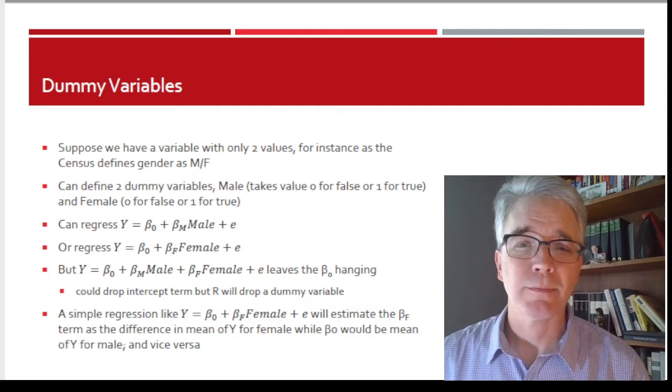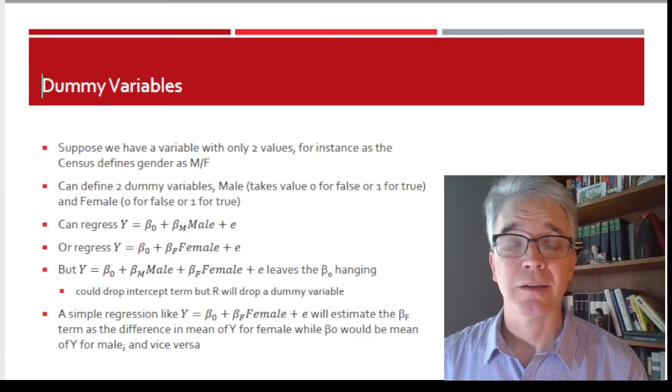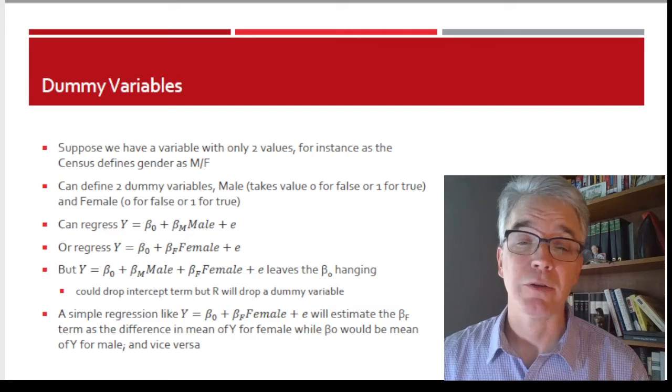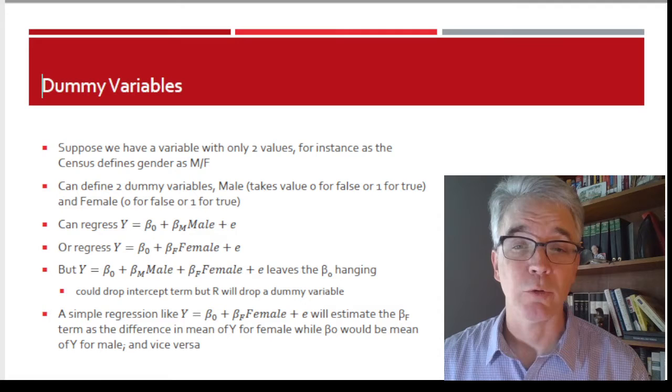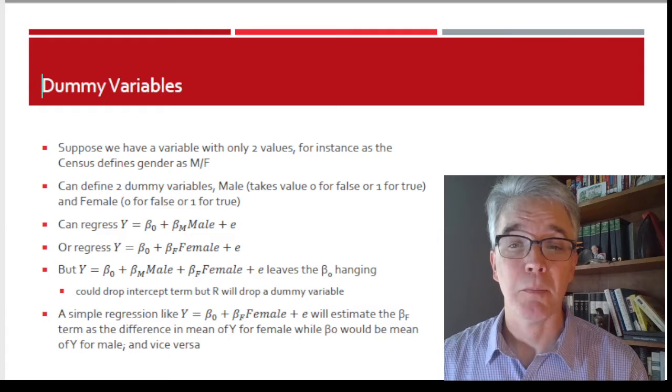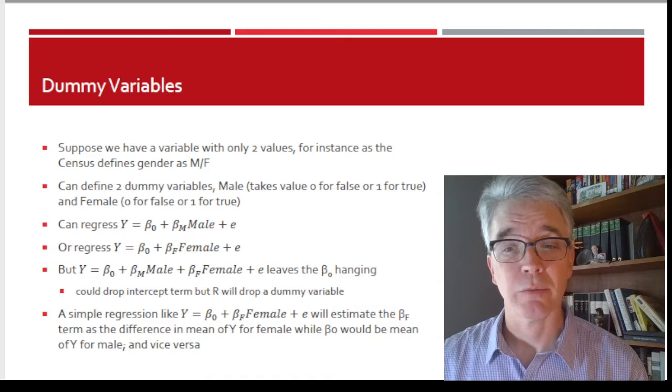So we could define two dummy variables, possibly. One would be a dummy variable male, takes the value 0 when that's false, 1 if it's true. Or we could define a dummy variable female that takes the value 0 for false, 1 if true. And so we could do either of two regressions. We could say Y = β₀ + βₘMale + ε, or Y = β₀ + βₓFemale + ε.